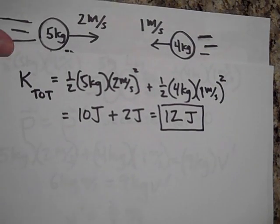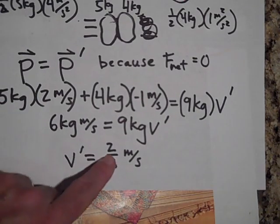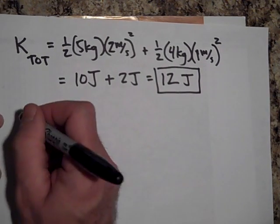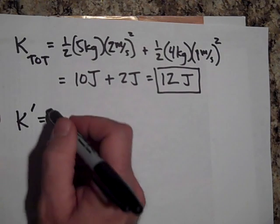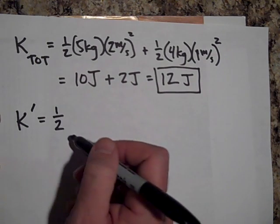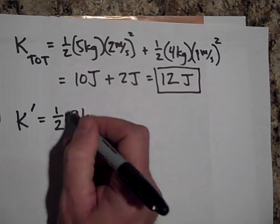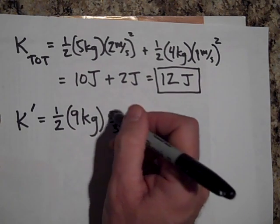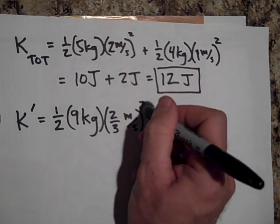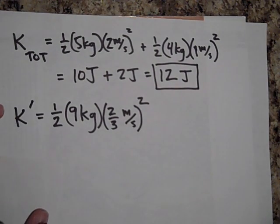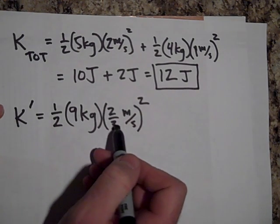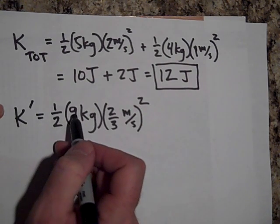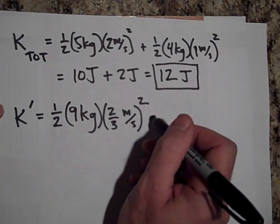Let's see about afterwards. Afterwards we said that this velocity was two-thirds meters per second, so let's hope the numbers work out here. K afterwards is, we have this blob of clay now, that's one-half, the mass is now 9 kilograms times the two-thirds meters per second squared. All right, so that's going to be four-ninths when I square that. That nine will cancel out and so I'm left with four times a half, so that's 2 joules.